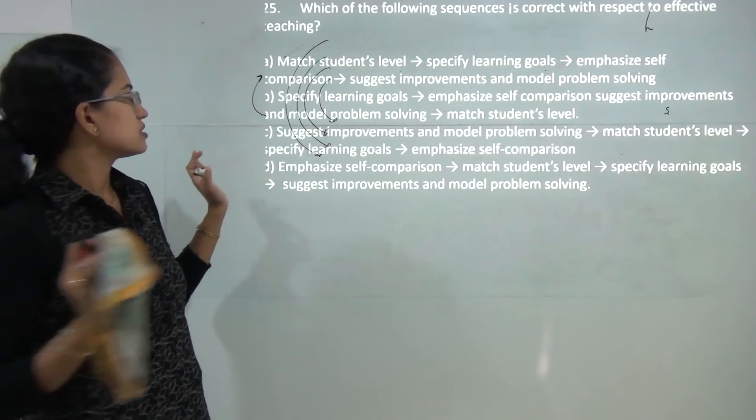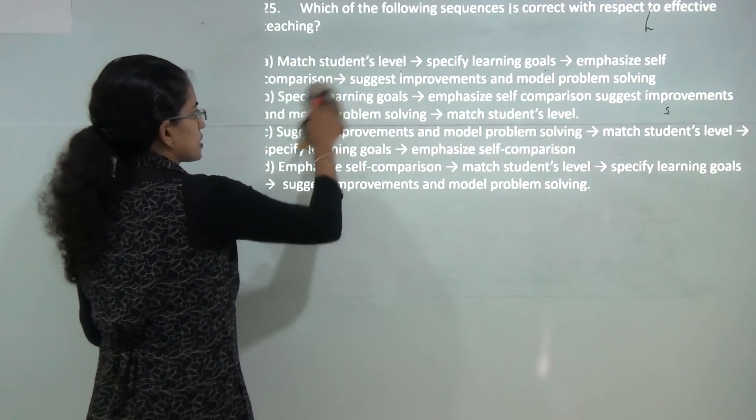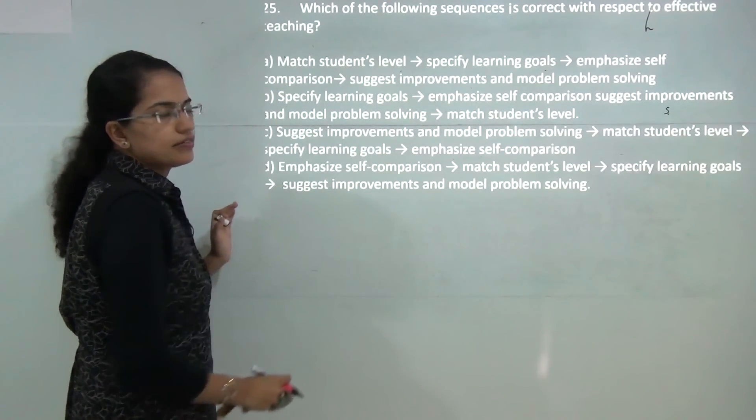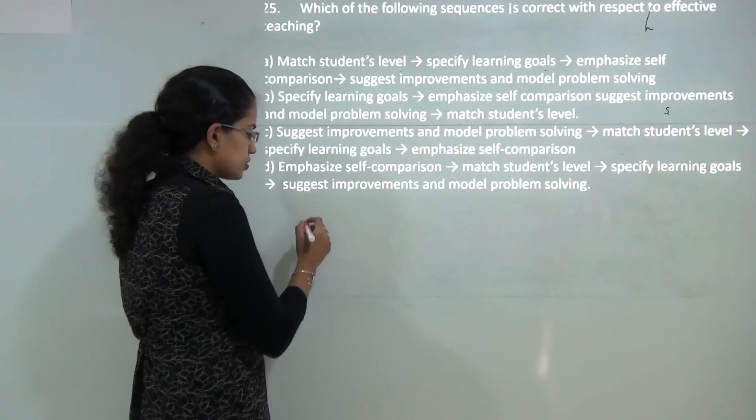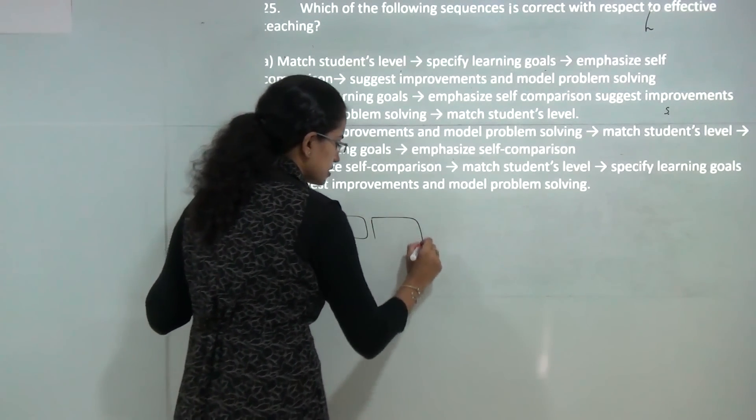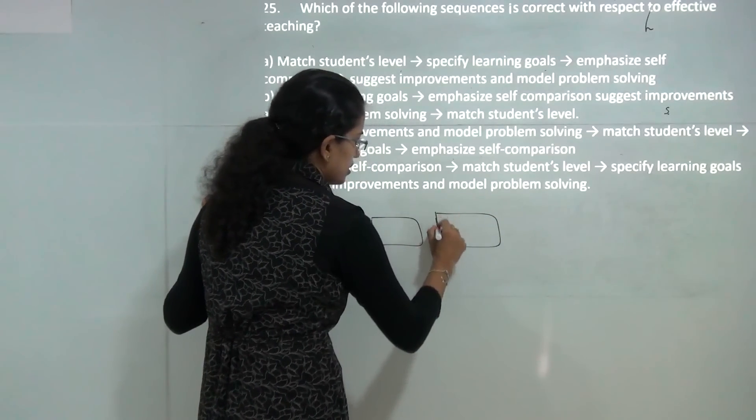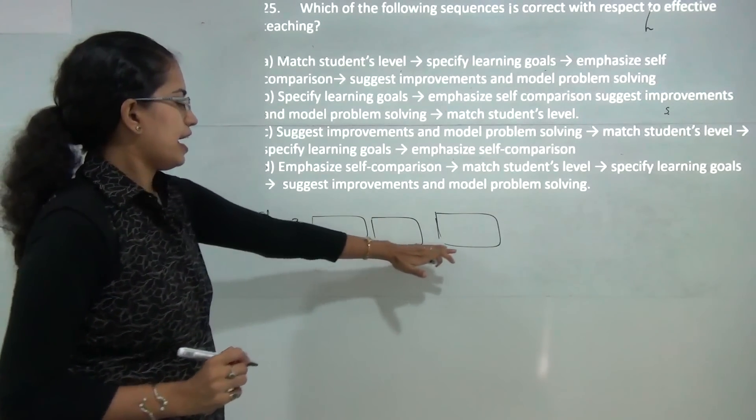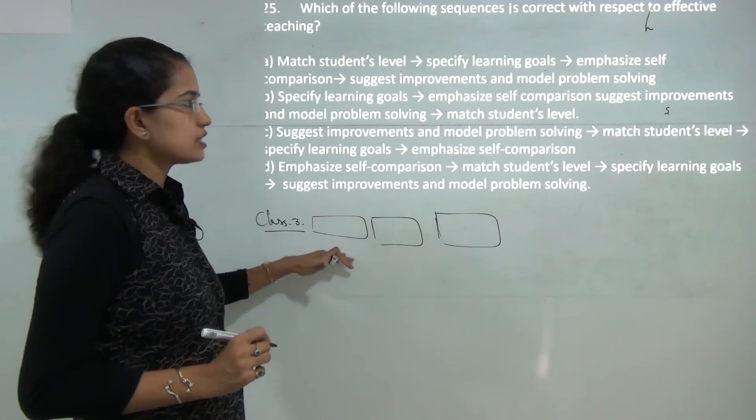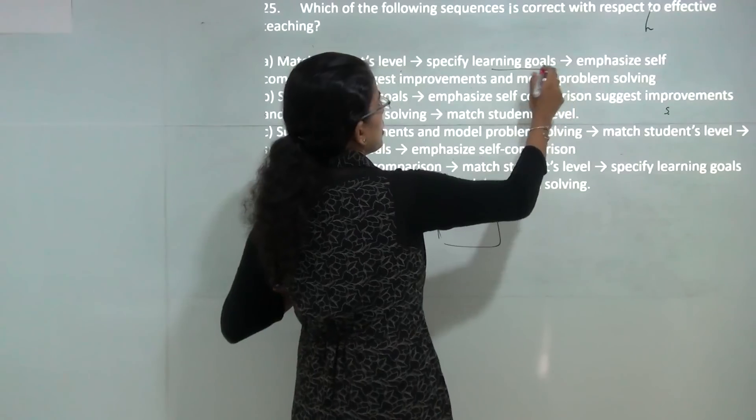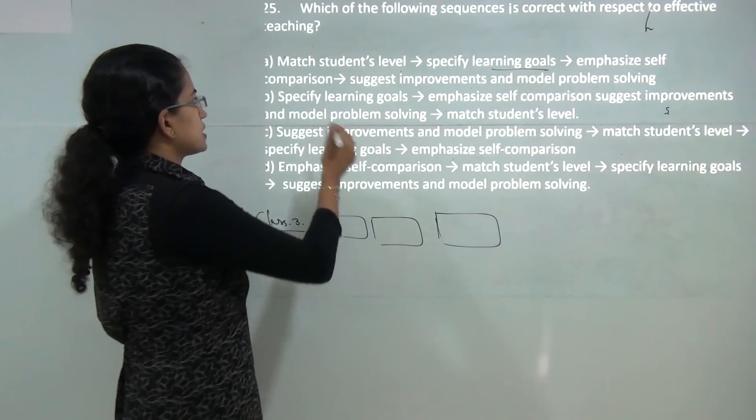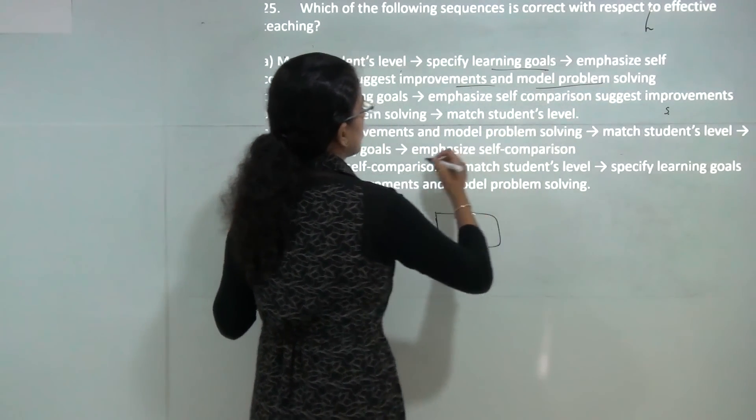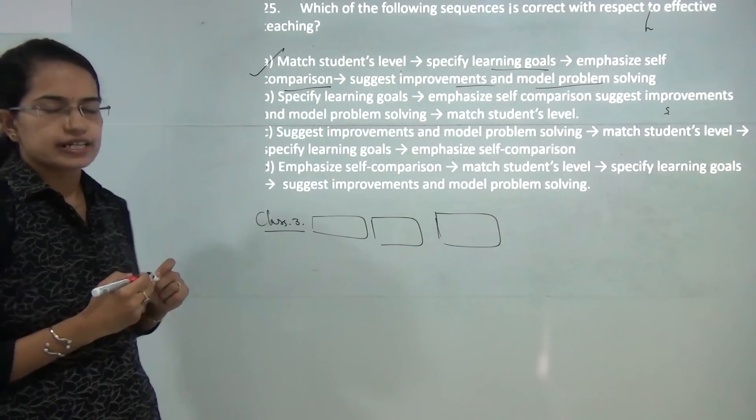Finally, this question is based on logical analysis. What is asked is which is important with respect to effective teaching. First to understand effective teaching, I would have to match the level of students. Like say, these are the level of students who are suitable for grade 3. So once I have a level that I have matched for the students, I can specify the learning goals. Once the learning goals are done, I can emphasize on self-comparison and then suggest improvements, and model problem solving can be done. So A would be the correct answer here.